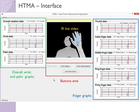On the left side, line graphs show the wrist and palm variation along with an overall measurement that averages the data from all the micro variations.